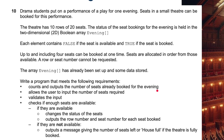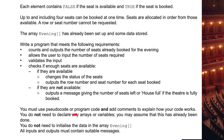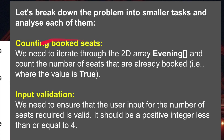The program should allow the user to input the number of seats required, up to four, and validate that input - this is important, probably the hardest bit. It checks if enough seats are available. If they are available, it changes the status of the seats and outputs the row number and seat number for each seat booked. If they are not available, it outputs a message giving the number of seats left, or 'house full' if the theatre is fully booked. You must use pseudocode or program code and add comments to explain how your code works. All inputs and outputs must contain suitable messages.